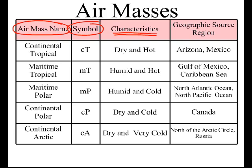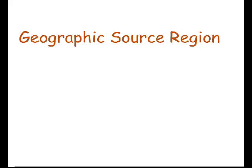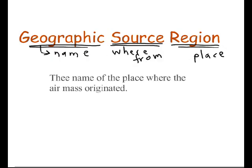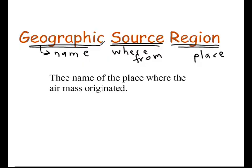The other thing you need to understand is the term geographic source region. Geographic source region is just a fancy way to say where something's from. Geographic means the name of a place, source is where it originated, and region is just a place — an area, a location. So geographic source region is the name of the place where the air mass originated. Whenever you see this term used, you're thinking about where the air mass came from.